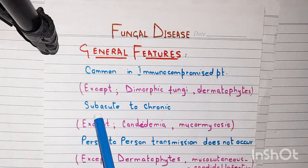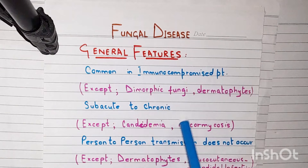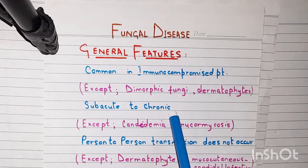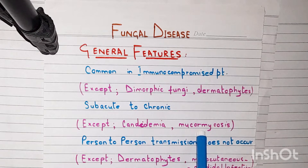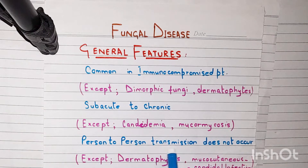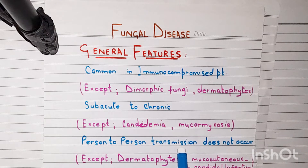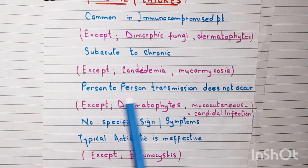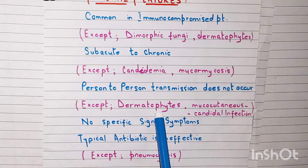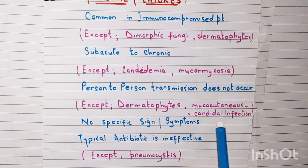Second, fungal infection is typically acute to chronic, and most often it is chronic — except candidemia and mucormycosis. Third, person-to-person transmission does not occur, meaning it is not contagious — except dermatophytes and mucocutaneous candidal infections.